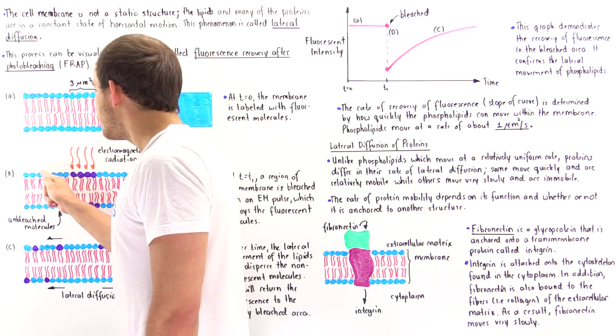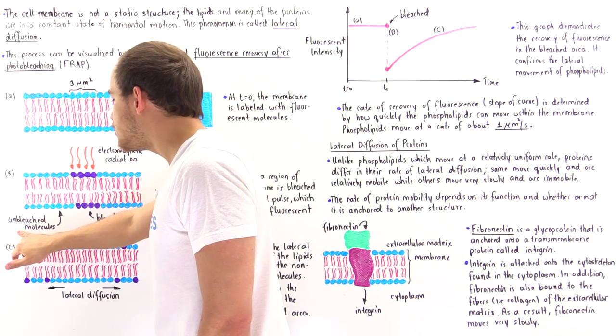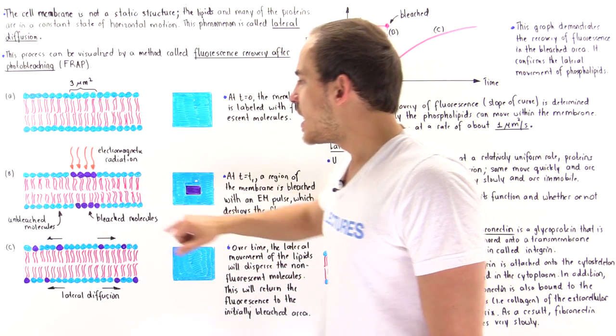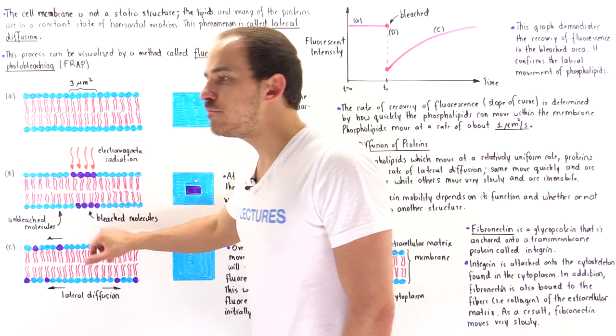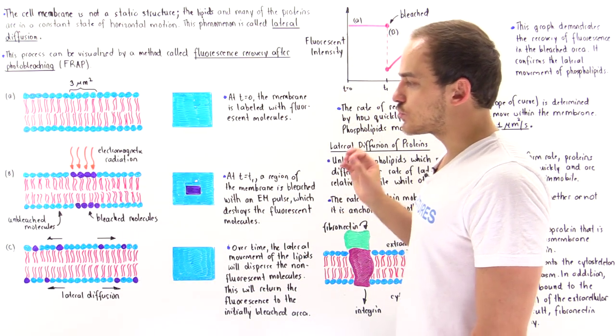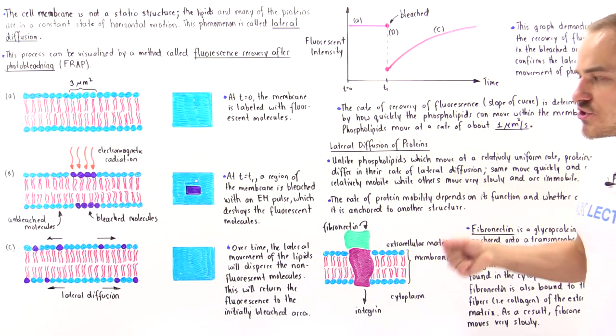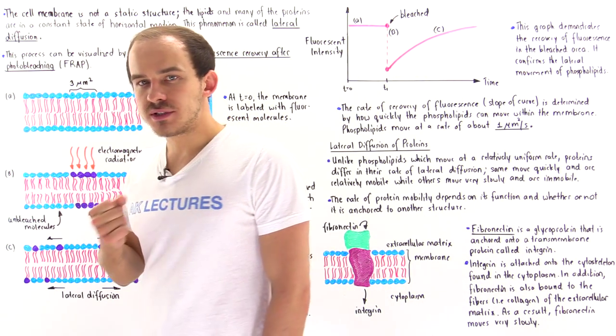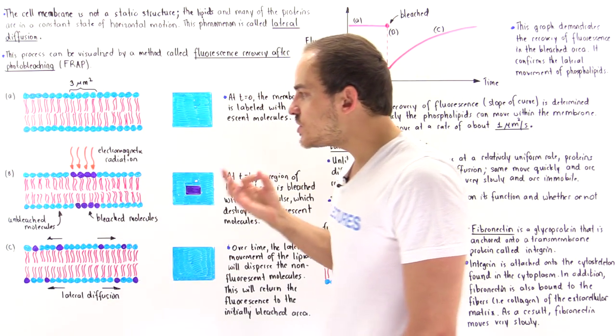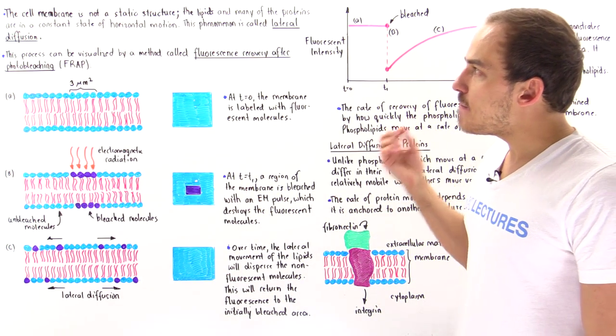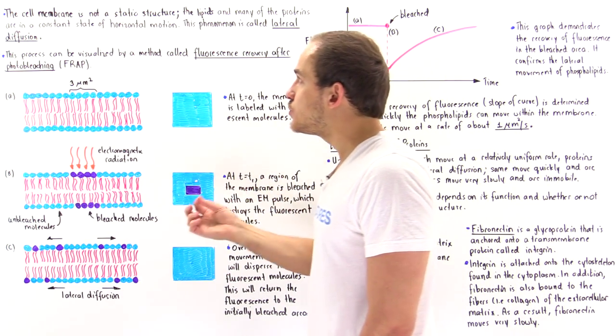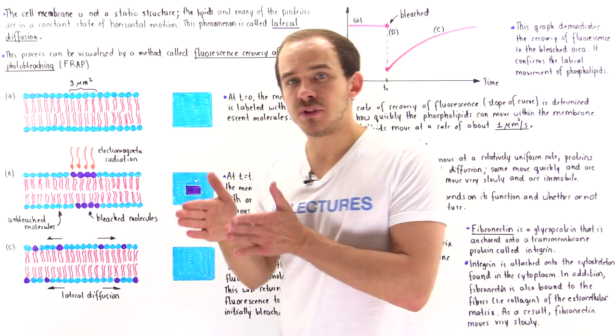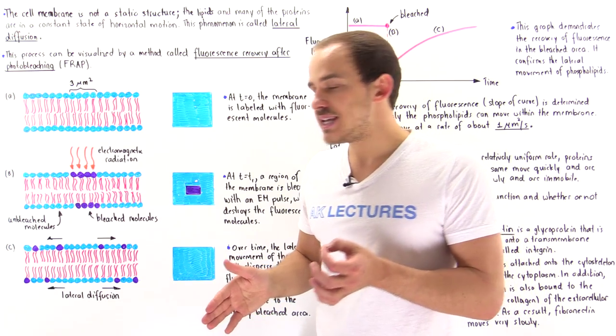So all these molecules here are the unbleached molecules, the ones that weren't destroyed by the electromagnetic radiation, but these molecules have been bleached. They have been destroyed. The fluorescent markers have been destroyed. Now what exactly are we going to see? Well, if there was no movement, and if the membrane was in fact a rigid and a static structure, then that means this area will remain bleached.